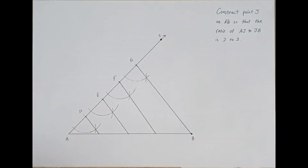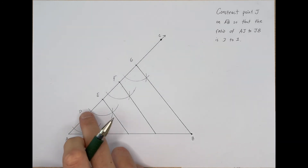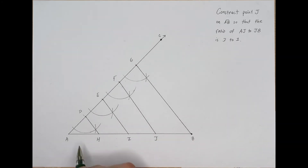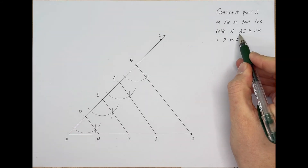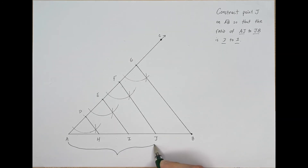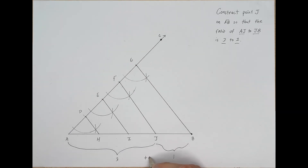We've now created three more vertices down here on segment AB. Let's label them: we'll call these H, I, and J. So now we can see we have AH, AI, AJ, and JB. Our original goal was for the ratio AJ to JB to be three to one. Here is A to J — one, two, three — and J to B, which is one. There's our three to one ratio. And that is how we construct a point along a directed line segment.